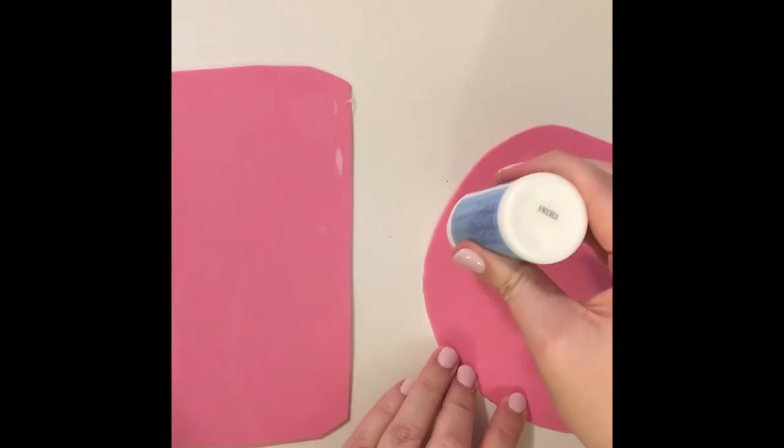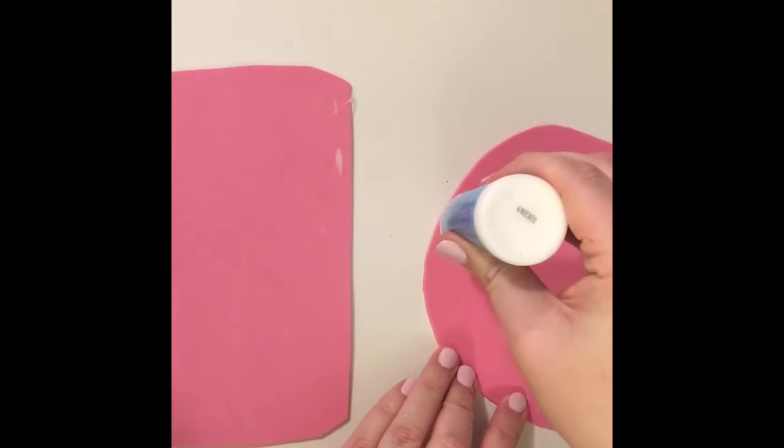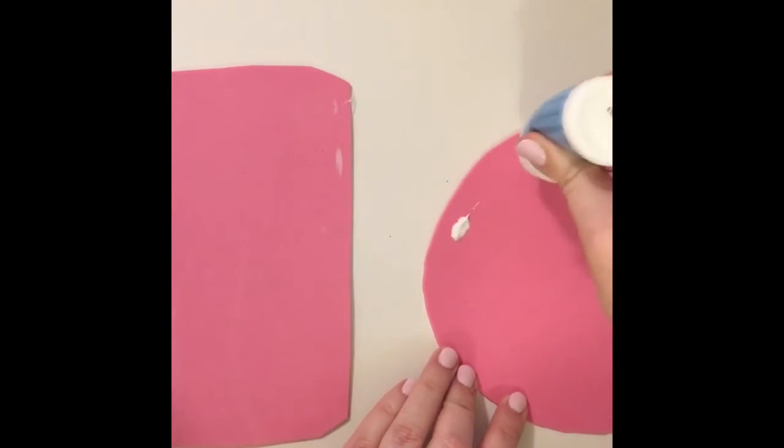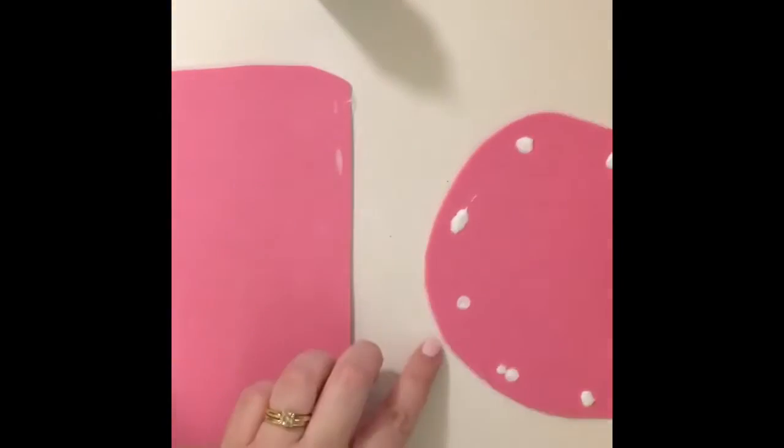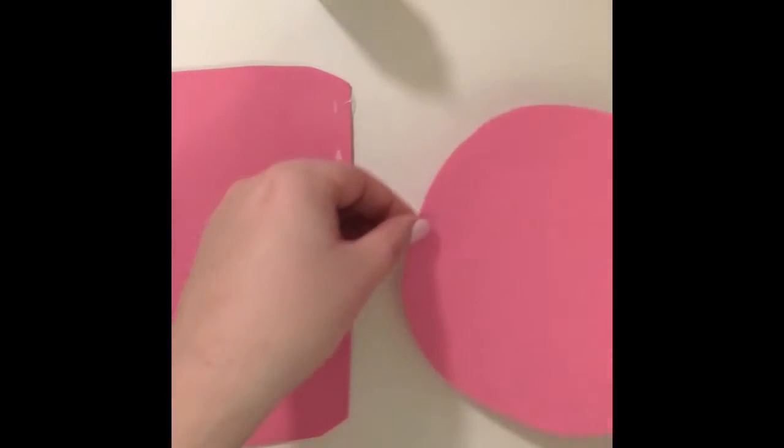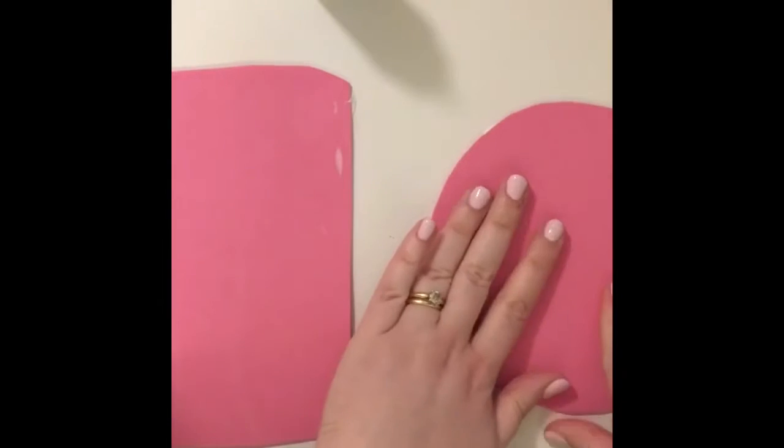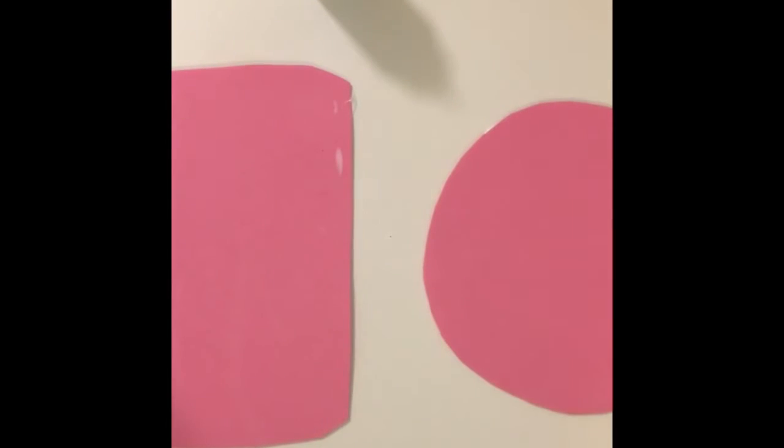And then do the same thing with your other cell, couple of dots of glue. If they start to come apart later, we can always add more.